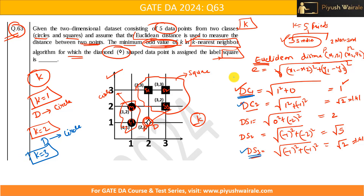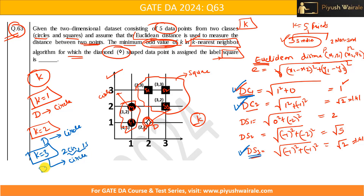When k = 3, the three nearest neighbors are DC1 (distance 1), DC2, and DS3 (both distance sqrt(2) ≈ 1.41). Out of these three, two are circles and one is a square, so D is again assigned to circle. k = 3 is not the answer.